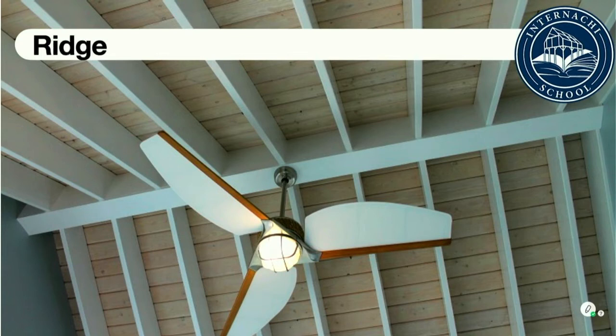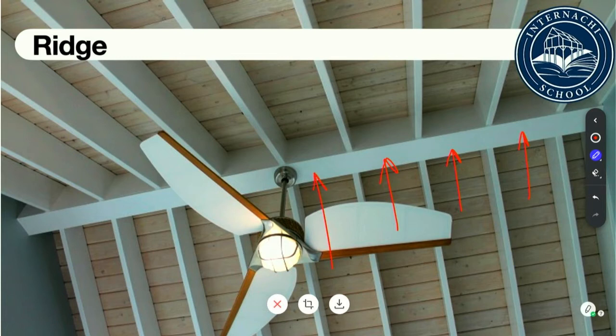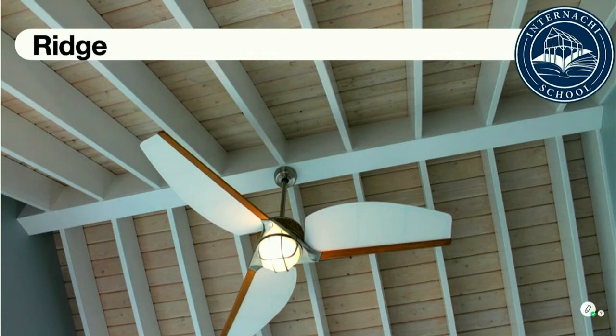The ridge or ridge beam is installed at the intersection of roof rafters at their uppermost point. Ridge beams are typically made of wooden components. Not all roof structures require a ridge beam. On high-sloping roofs, the ridge beam may be comprised of thin materials used only as a nailing point or spacer. On lower-sloping roofs, the ridge actually carries a load and should be comprised of properly sized materials suitable for the purpose.